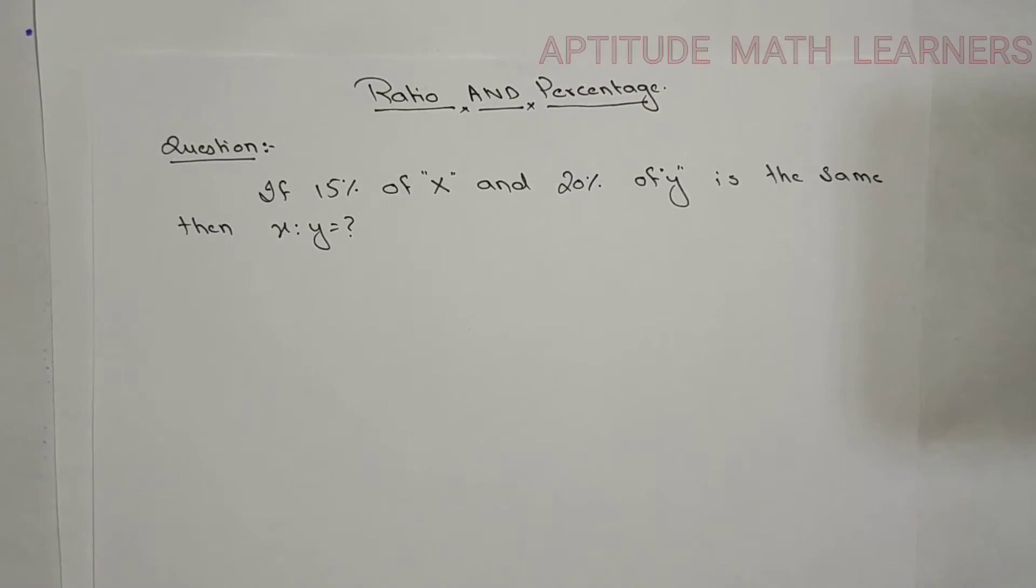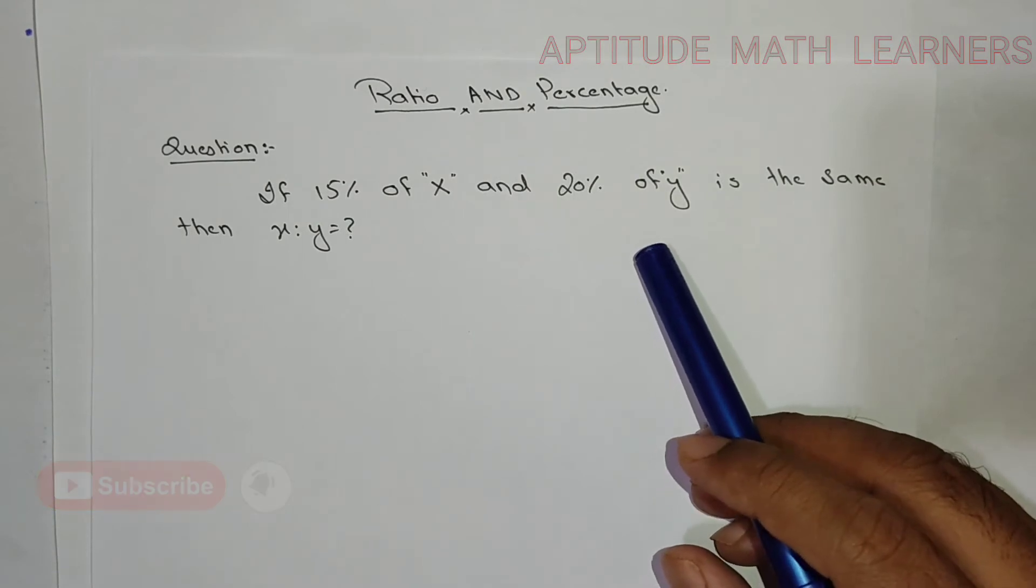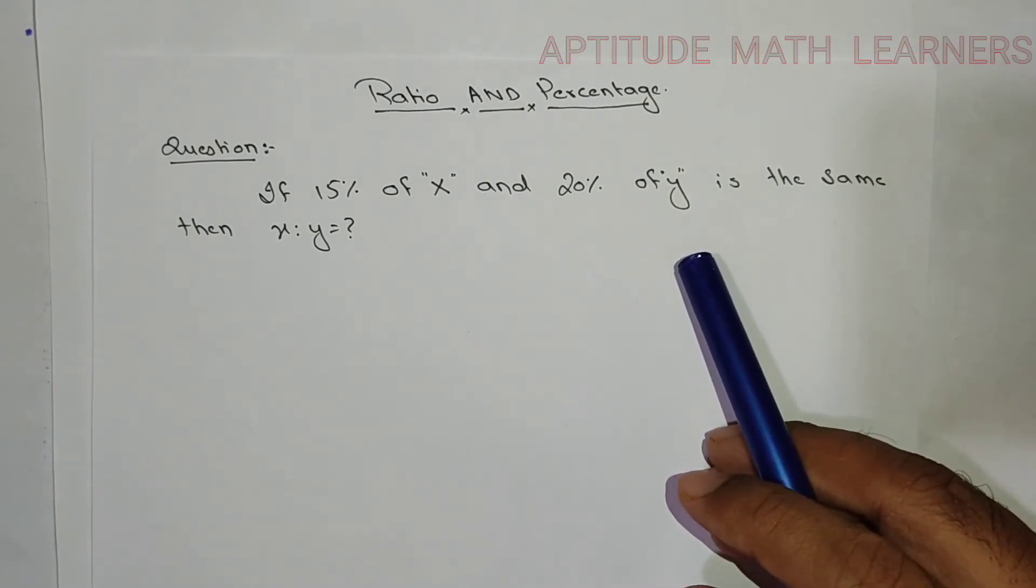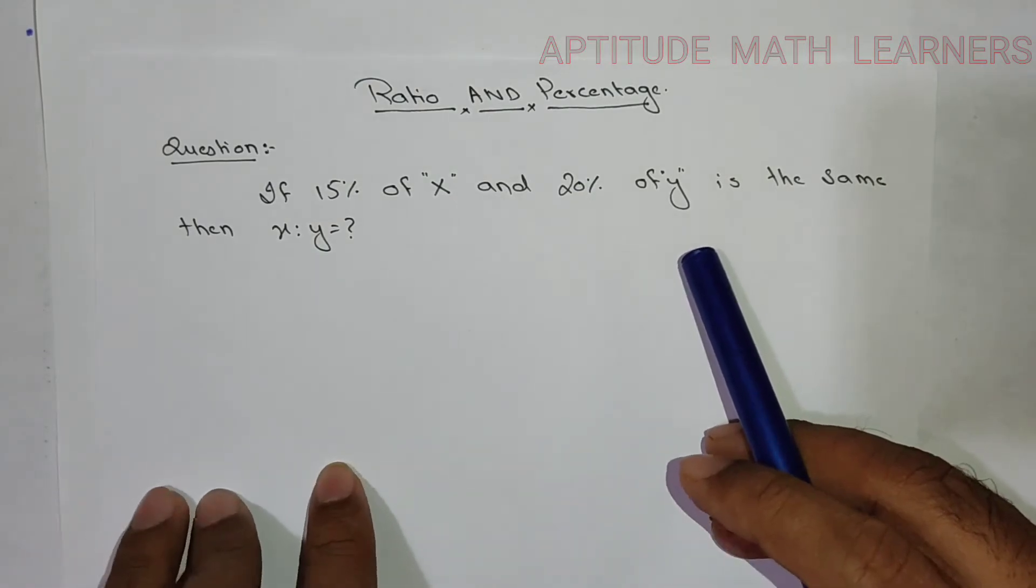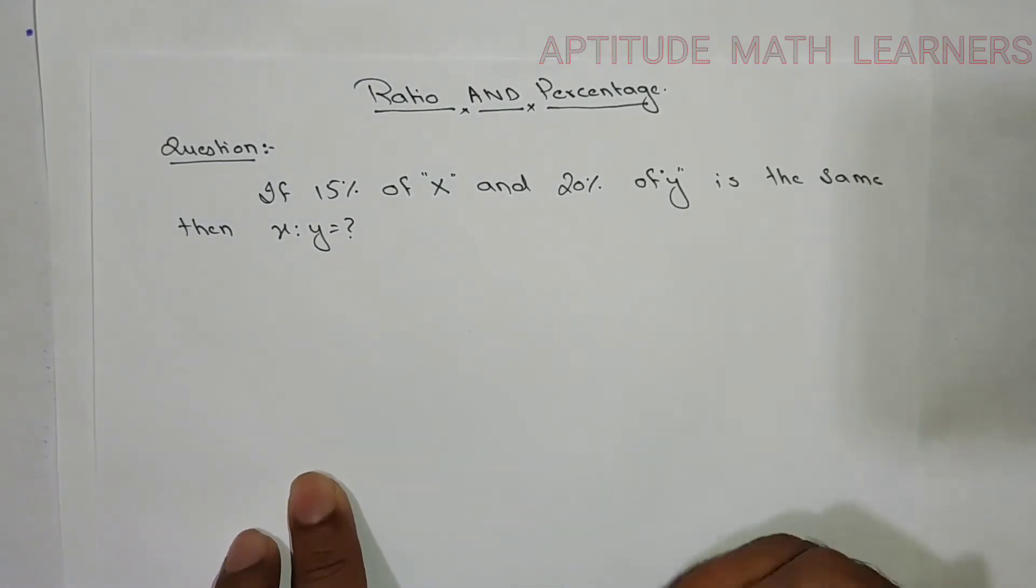Hello and hi to our YouTube channel Aptitude Math Learner. Today we are having a question related to ratio and percentage. The question is: if 15% of x and 20% of y is the same, then x ratio y is equal to? So we have to find x ratio y. Let's begin with our question.